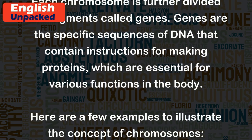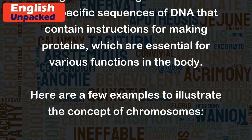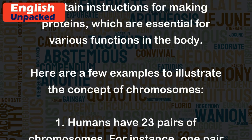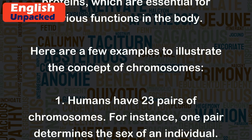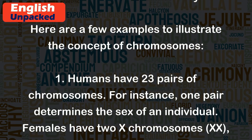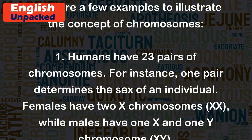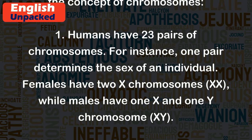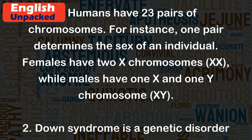Here are a few examples to illustrate the concept of chromosomes. Humans have 23 pairs of chromosomes. For instance, one pair determines the sex of an individual. Females have two X chromosomes (XX), while males have one X and one Y chromosome (XY).